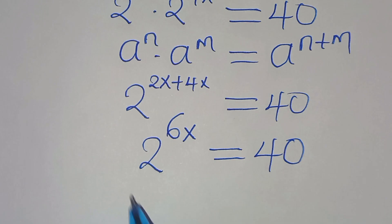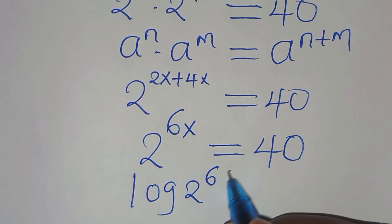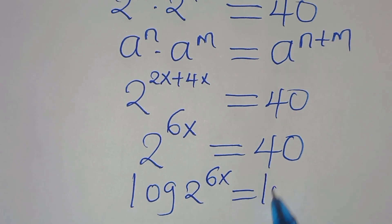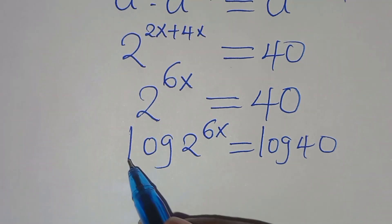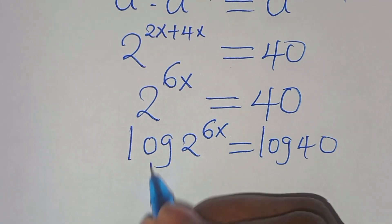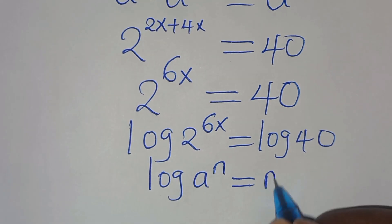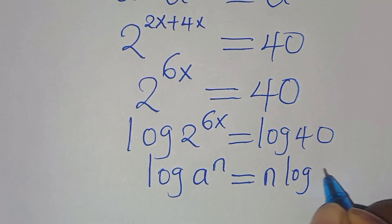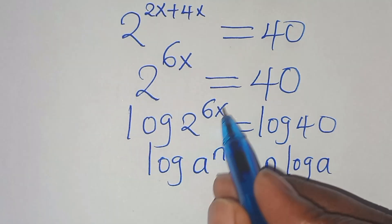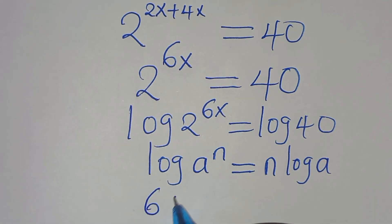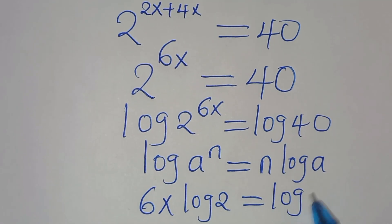To solve for x, we introduce logarithm on both sides, so we have log of 2 to the power of 6x equal to log 40. Now log of 2 to the power of 6x is in the form of log a to the power of n, which we can express as n times log a. Applying this power property of logarithms, 6x log 2 equals log 40.